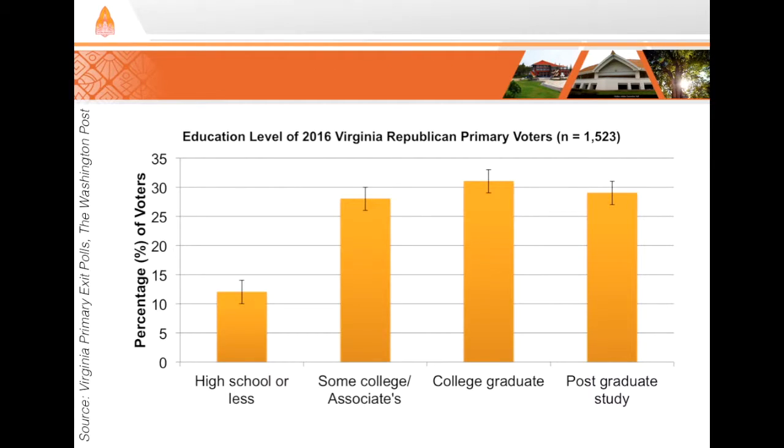Before we get started, I'd like to demonstrate what we can do with inferential statistics. Let's go back to the example of the Virginia Republican primary exit poll results from session 18. If you remember, we saw that about 12% of Virginia primary voters had a high school degree or less. However, we only sampled 1,523 voters out of more than 1 million, so we can't say for certain that the population's distribution of education levels is identical to our sample's.